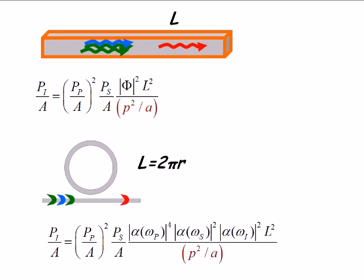But instead of this phase matching constraint here, what I have is factors that tell me how strongly the light is enhanced because it spends a lot of time in the ring.